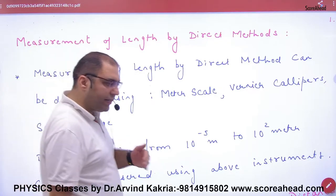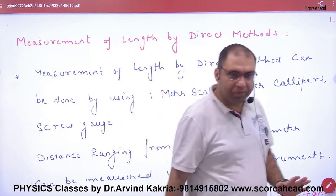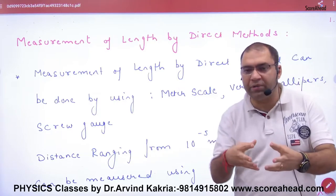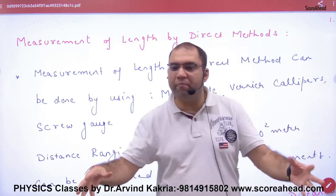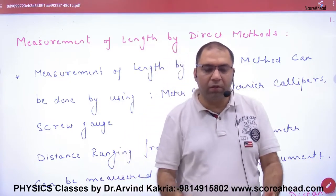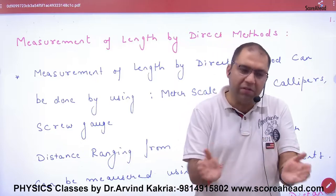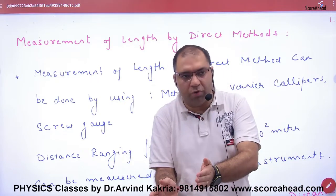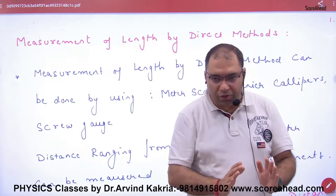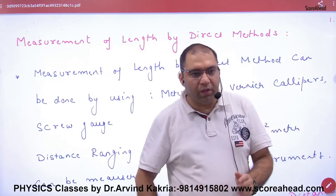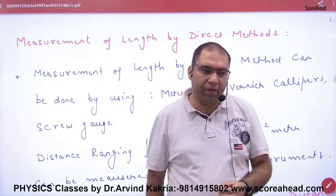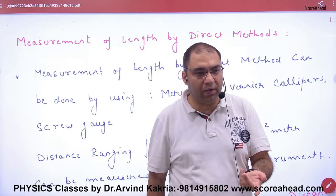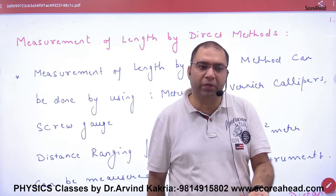Measurement of Length by Direct Method. We are going to measure distances — distances that are very small, such as the thickness of a sheet, a page, or the radius of an atom. The radius of an atom is a very small distance.